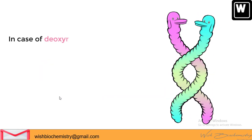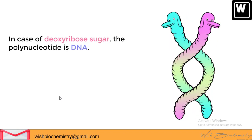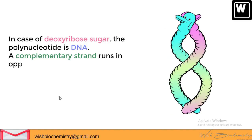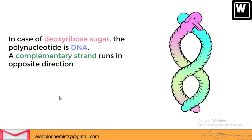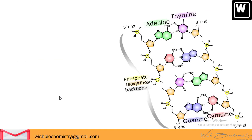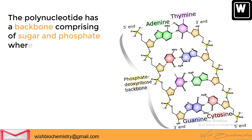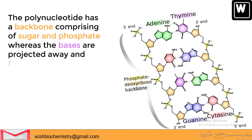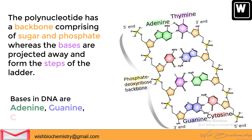In the case of deoxyribose sugar, the polynucleotide is DNA. DNA is double-stranded — remember D is for deoxy and D is also for double strand. A complementary strand runs in the opposite direction. In the DNA ladder model, the sugar-phosphate backbone forms the supports and the bases form the steps. The nitrogenous bases in DNA are adenine, guanine, cytosine, and thymine — note that uracil is not present in DNA. Also, thymine is a nitrogenous base, whereas thiamine is vitamin B1.